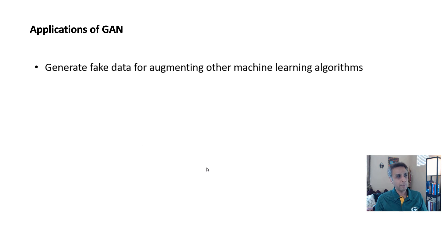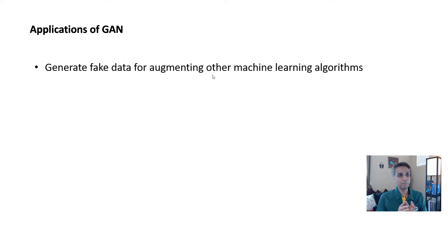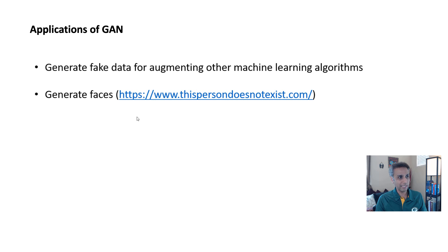A few applications — if you generate fake data for augmentation of machine learning, for example you're trying to do machine learning-based image segmentation and you don't have a lot of ground truth data, there are many augmentation techniques like stretching, rotating, or other transformations — those are still valid. But if you want to generate fake data, you can also try GANs for generating that. You can also generate faces — a fun website to visit is thispersondoesnotexist.com. The people this website generates look so realistic; it uses GANs to do that.